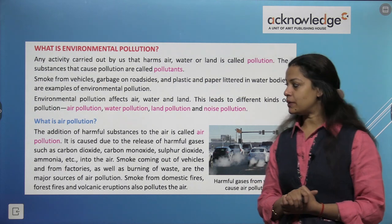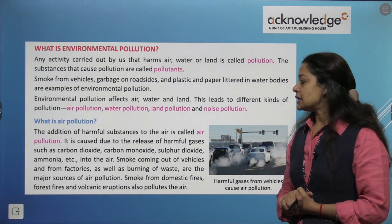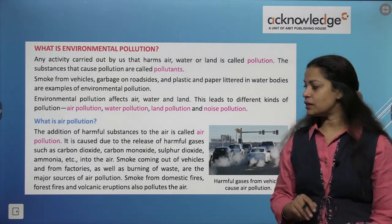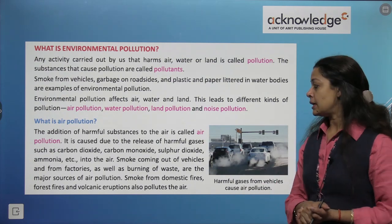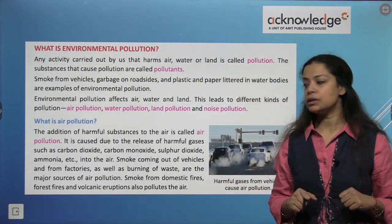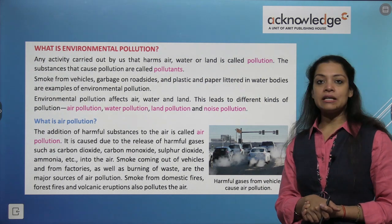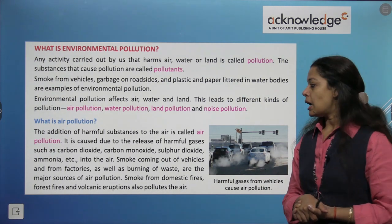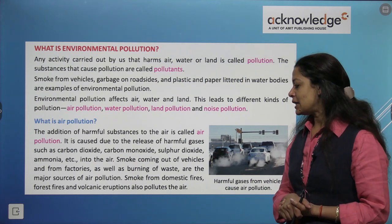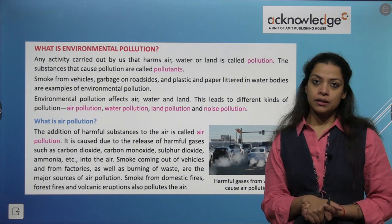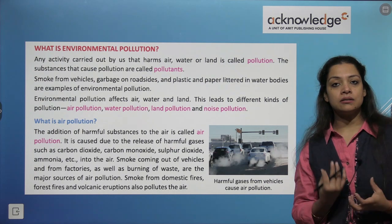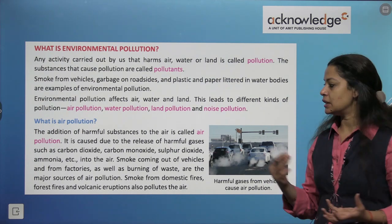Coming to air pollution — addition of harmful substances to the air is called air pollution. It is caused due to the release of harmful gases from various industries and factories, such as carbon dioxide, carbon monoxide, sulfur dioxide, and ammonia. These are very harmful gases for all living organisms. Smoke from vehicles and factories, burning of waste, domestic fires, forest fires and volcanic eruptions also pollute the air.